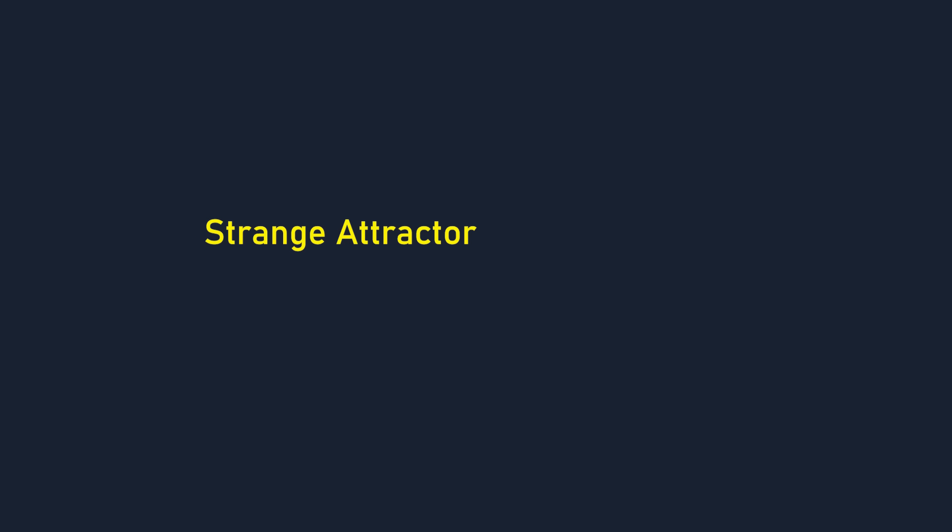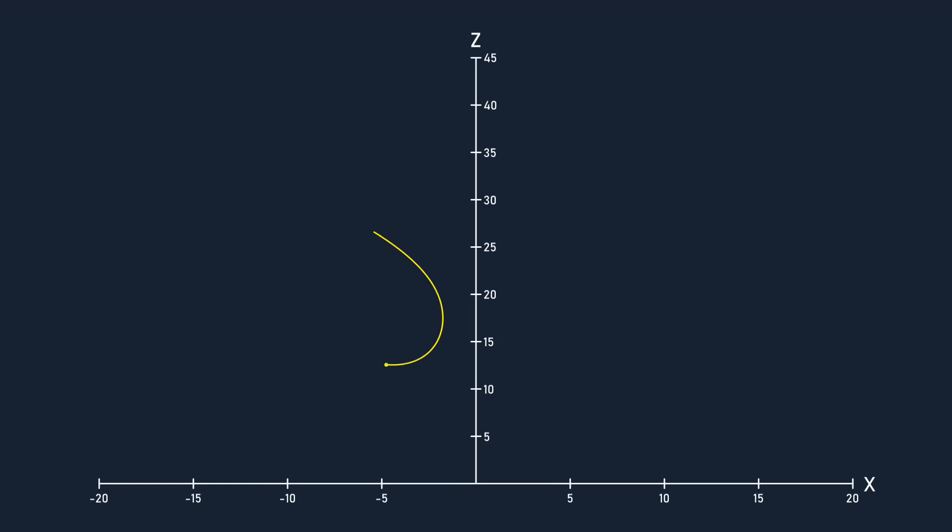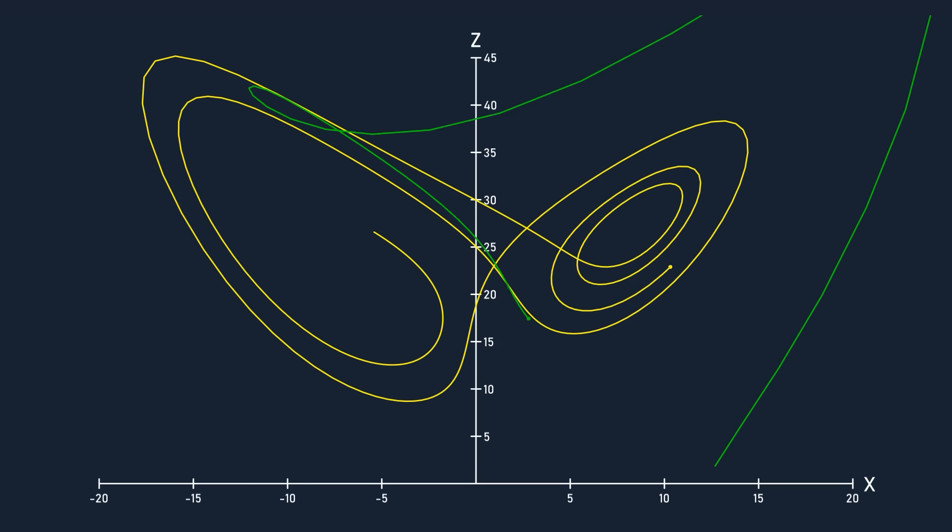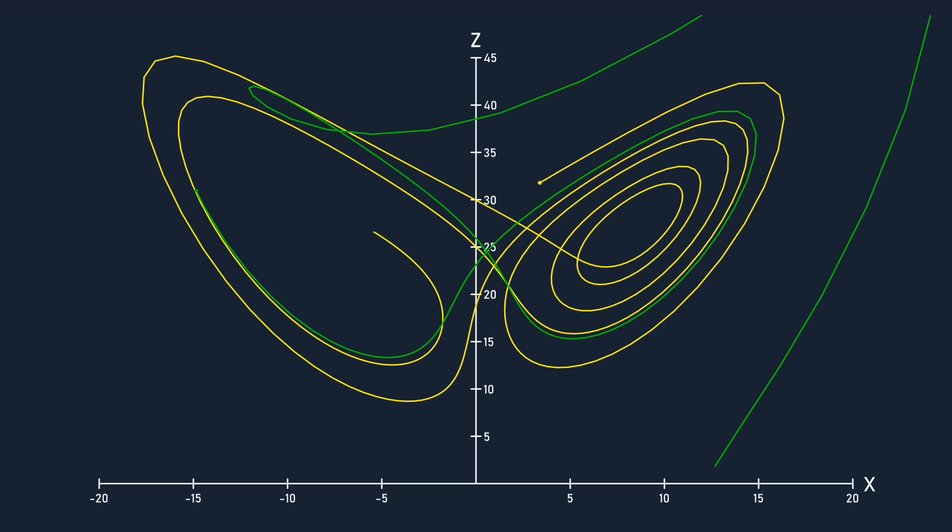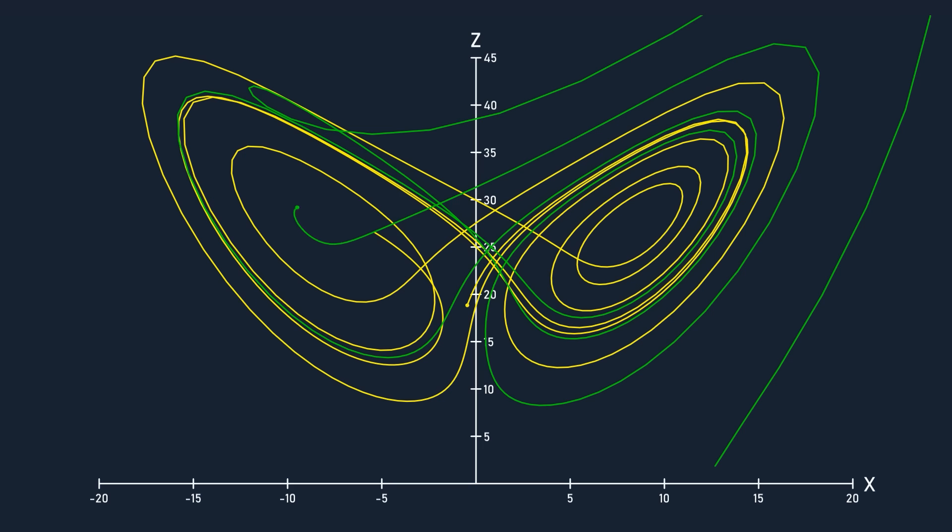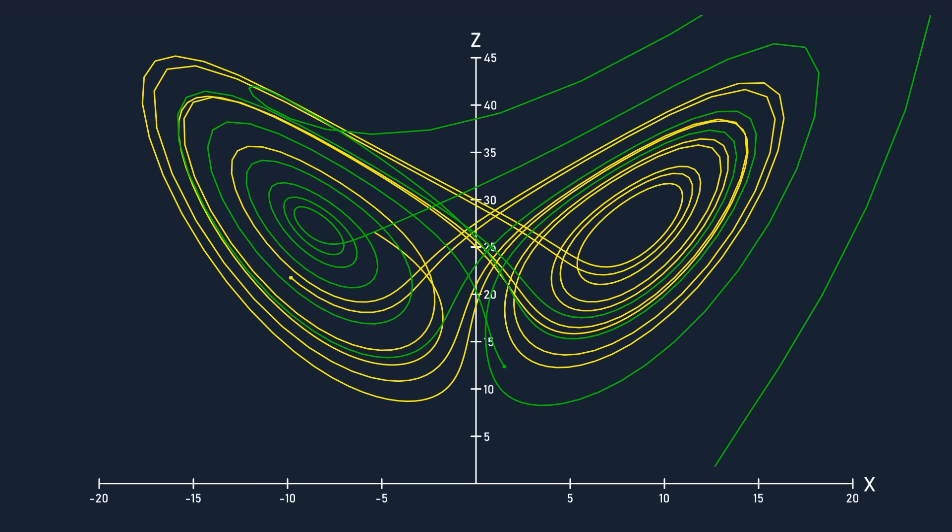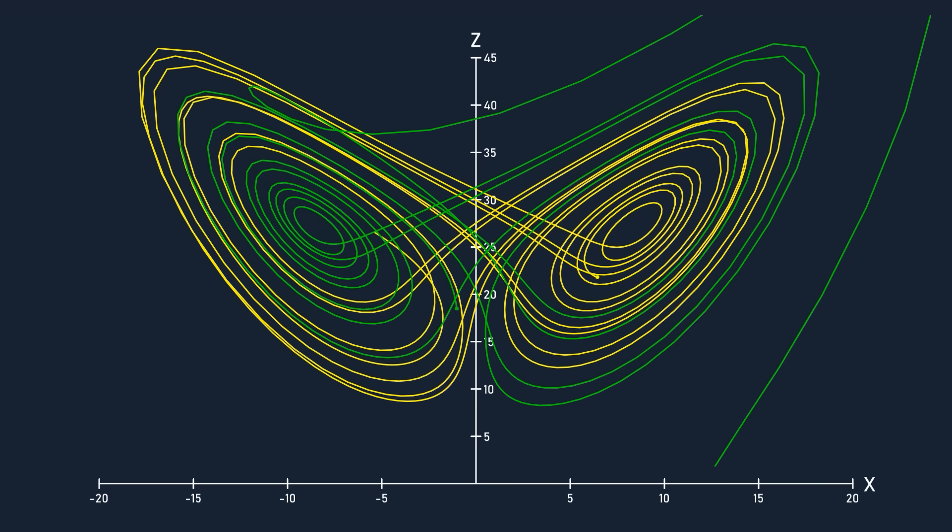A strange attractor is one that has a fractal structure. No point in the space is ever visited more than once by the same trajectory. If that happens, the trajectory would travel in a predictable loop. And no two trajectories will ever intersect. If that happens, they would merge into the same path, giving two different sets of initial conditions the same outcome. Think about what that means. A single trajectory will visit an infinite number of points in this limited space, and this limited space will have an infinite number of trajectories.